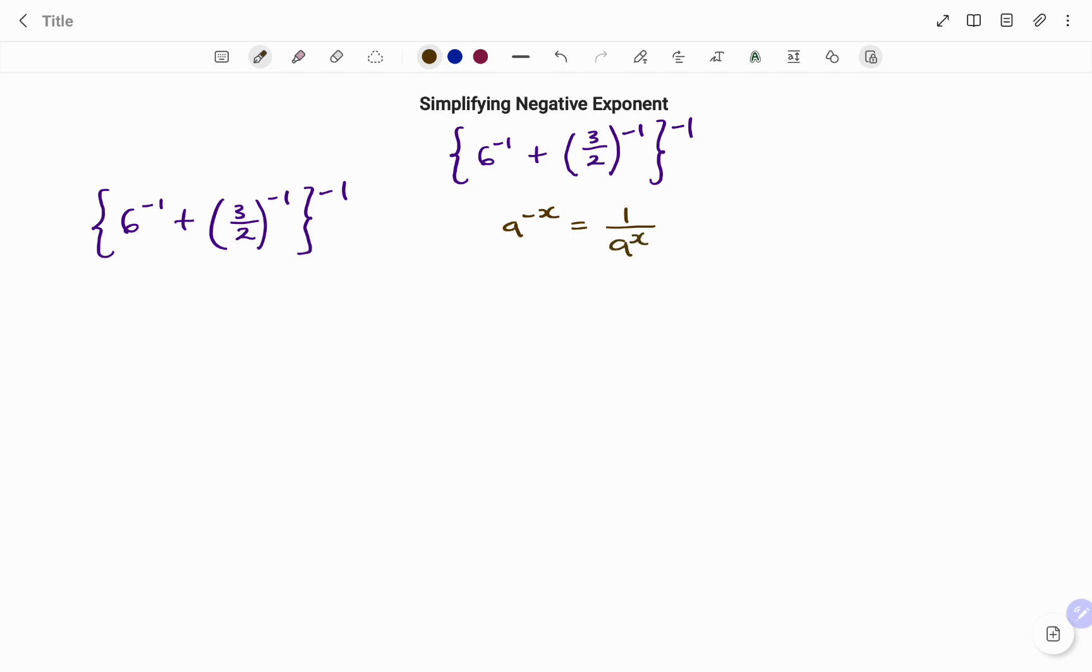Applying this to our bracket, 6 to the negative 1 becomes 1 over 6. Note that the power is 1. Then I have plus, the 3 over 2 to the negative 1 becomes 1 divided by 3 over 2. Closing the bracket, I still have my negative 1 outside.